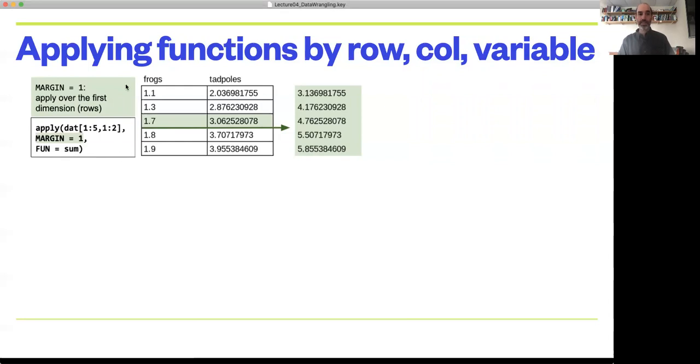And so the simplest version of that is just called apply. Its first argument is the data set you're interested in. So here we're looking at a subset of the frog data, the first five rows and the first two columns. And I want to say, let's say I want to take the sum of that data. So add the frogs and the tadpoles together. And I want to do that by row. And if I want to do that by row, I can use margin equals one, because that's the first dimension of the matrix.